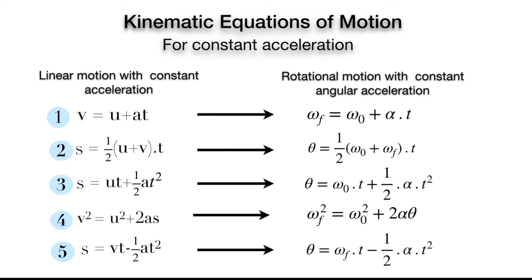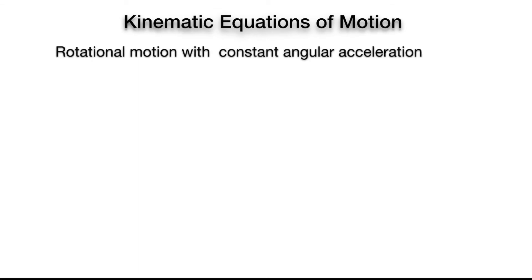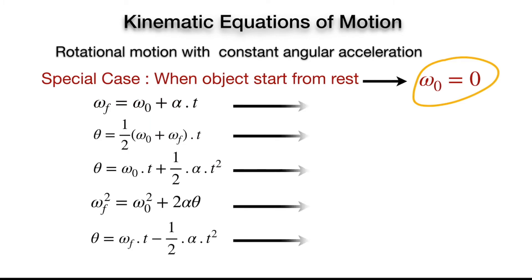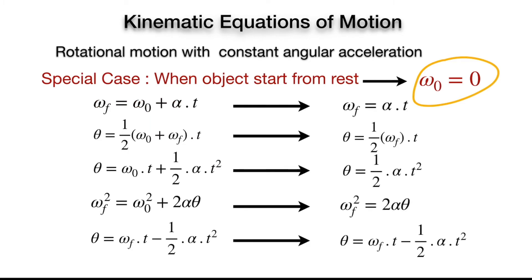One important thing: in rotational motion, the angular displacement theta can be measured in radians, degrees, or revolutions. So we must know the relation between radians, degrees, and number of revolutions. Now let's check out a special case of rotational motion when an object starts from rest, meaning the initial angular velocity omega_0 is zero. In this case, all five equations reduce to a simpler form by substituting omega_0 = 0.